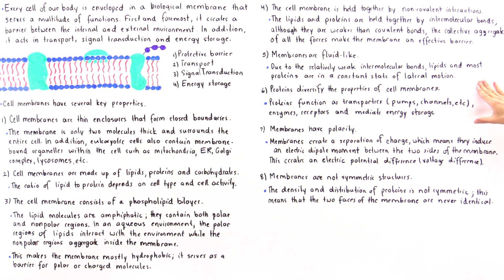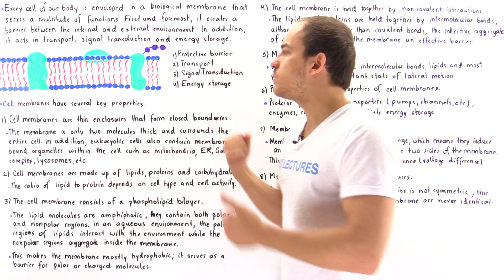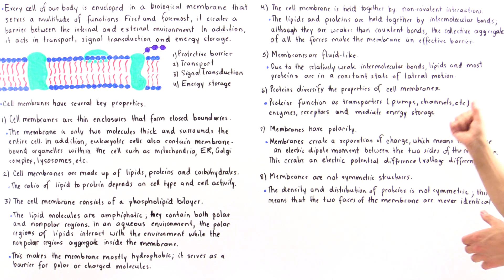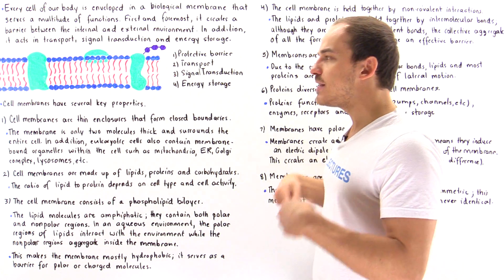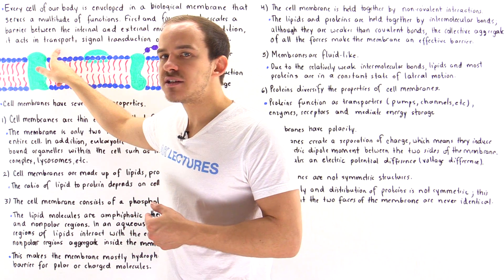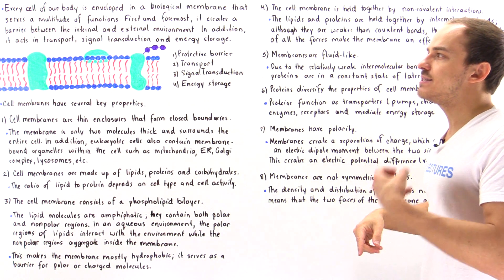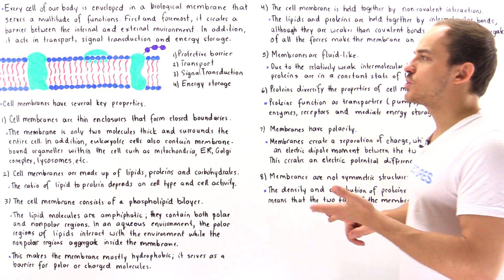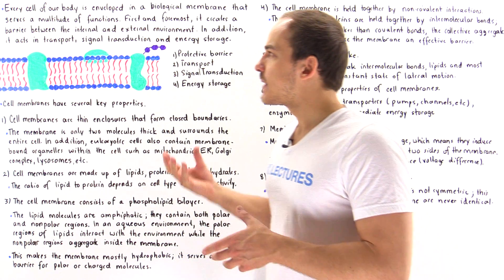The reason I say most proteins is because some proteins are actually attached to other structures and therefore don't move. Property number six: proteins diversify the properties of cell membranes. Proteins create many additional functions. For instance, it's the proteins that play a role in transport, selectively choosing what enters the cell and what doesn't. There are many types of transport proteins — pumps that use energy, channels, and so forth — which we'll discuss in more detail in a future lecture.